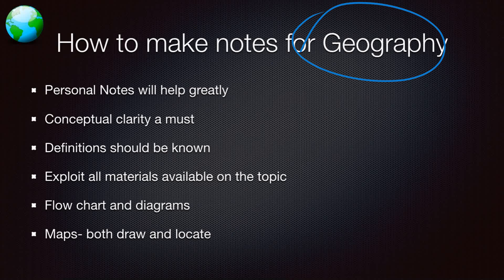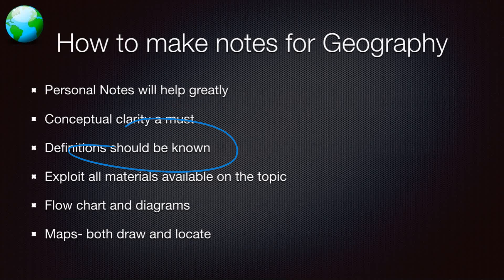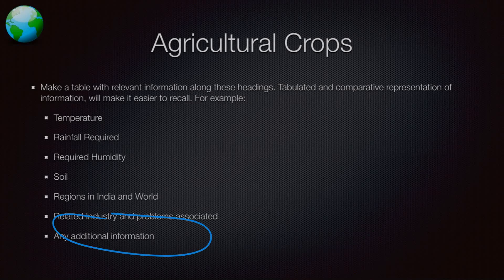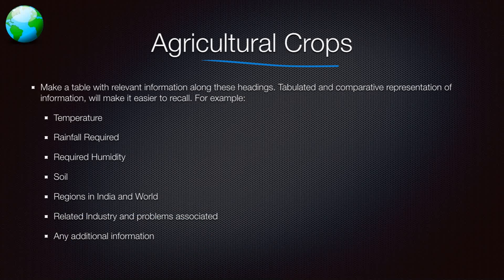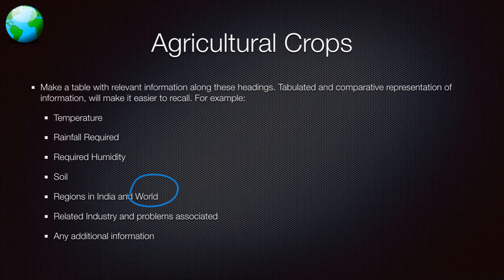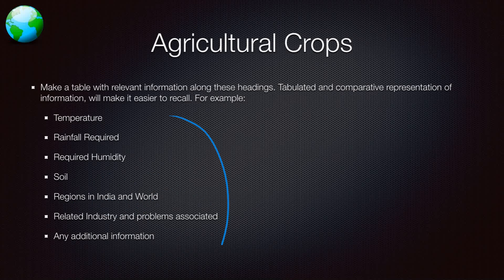For geography notes specifically, personal notes obviously help, and conceptual clarity is a must. Know the definitions, exploit all available materials on the topic but read them topic-wise. Develop flowcharts, diagrams, and maps as much as possible — draw and locate maps wherever you can. For agricultural crops, your notes should cover: temperature required, rainfall, humidity, soil, regions grown in India (districts and states), countries in the world, related industries, and associated problems — applicable to rice, wheat, maize, tobacco, etc.